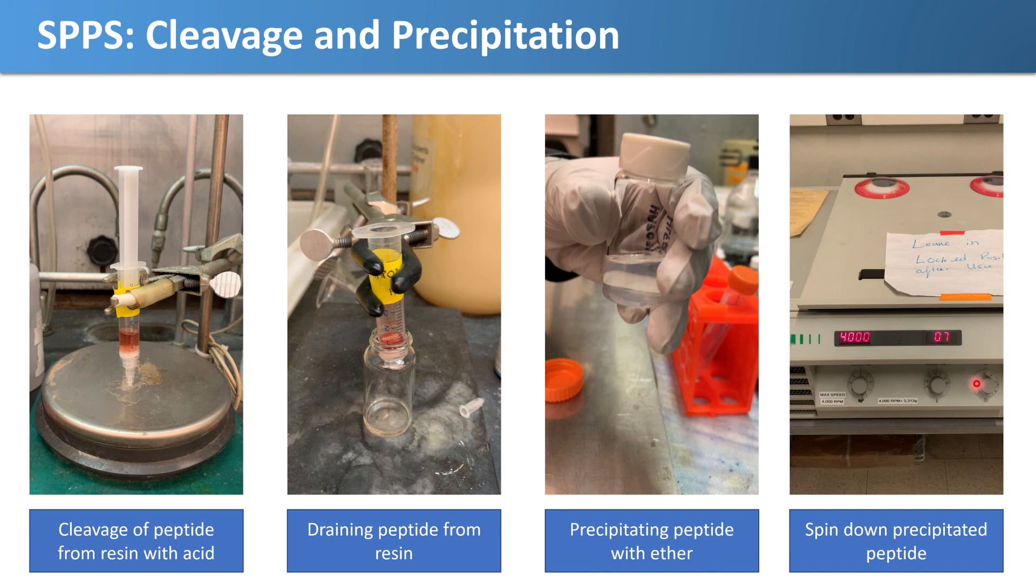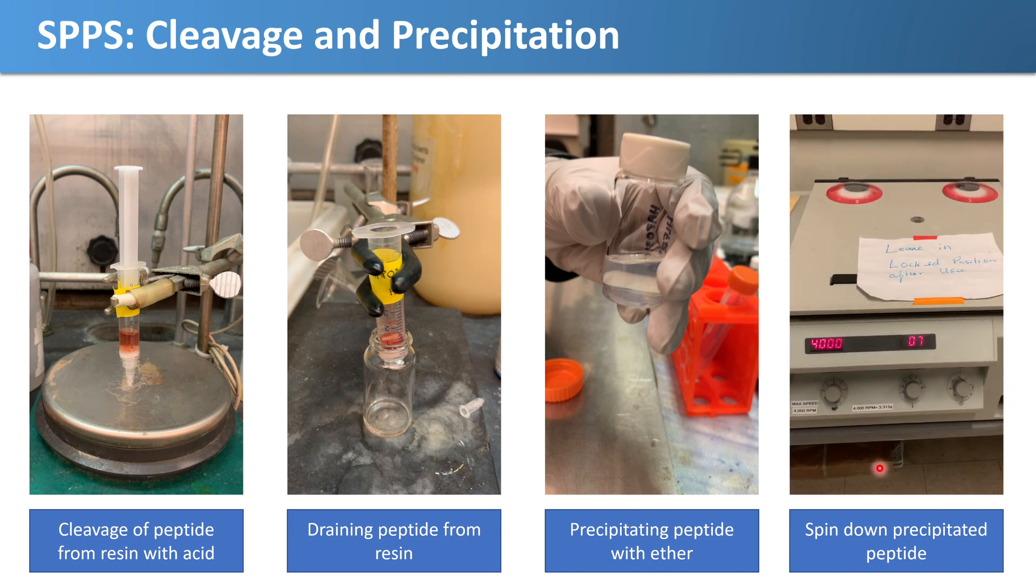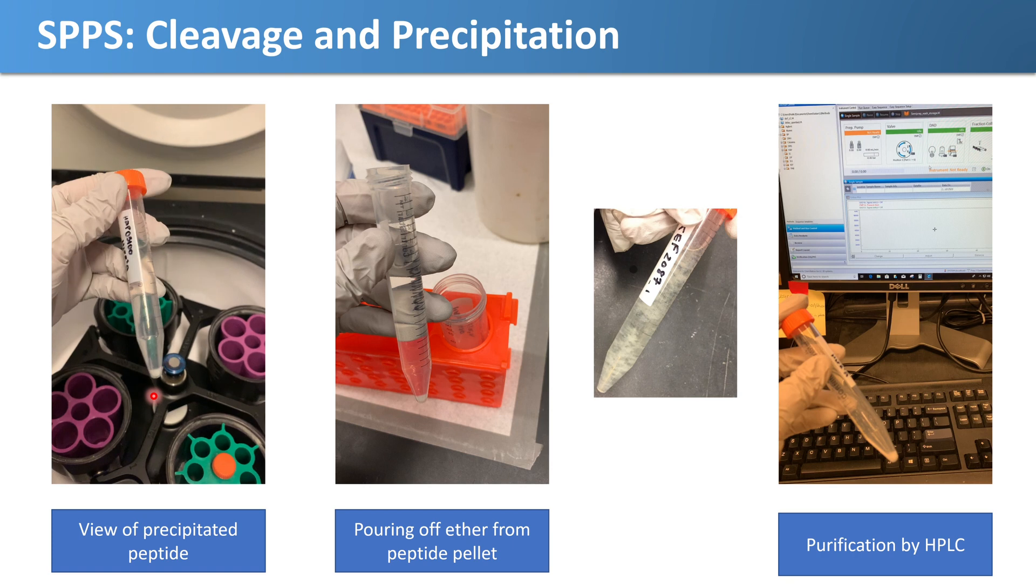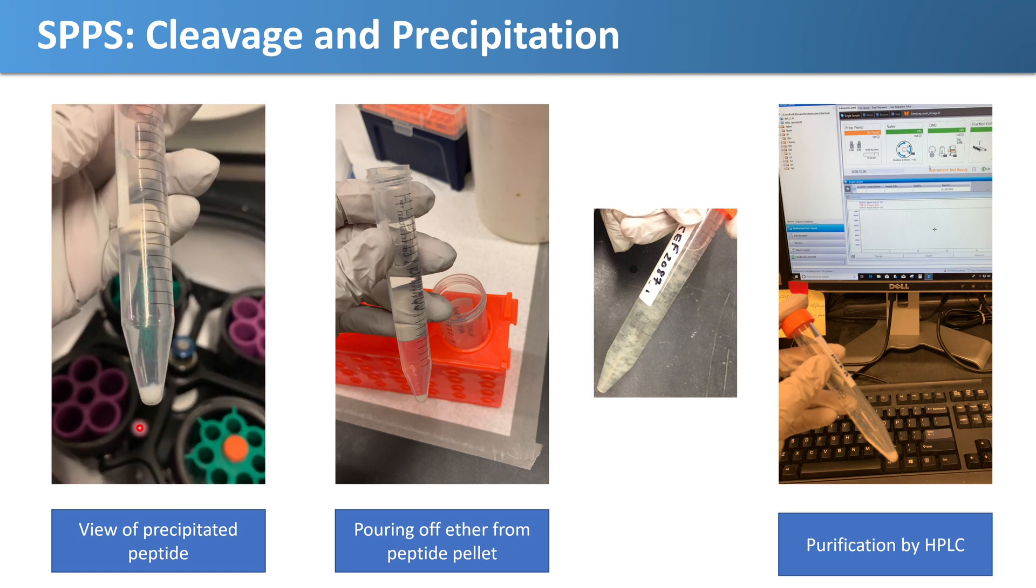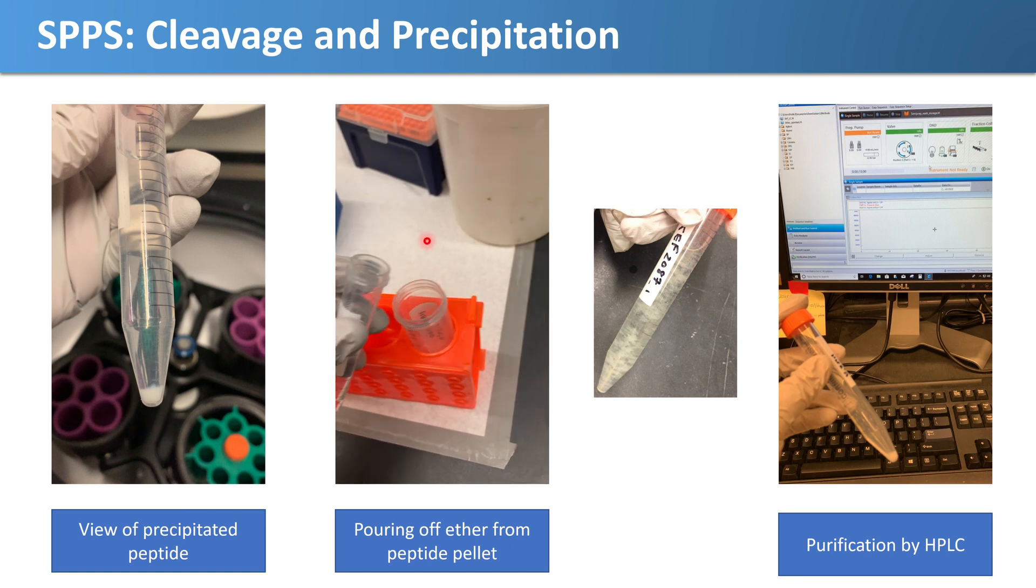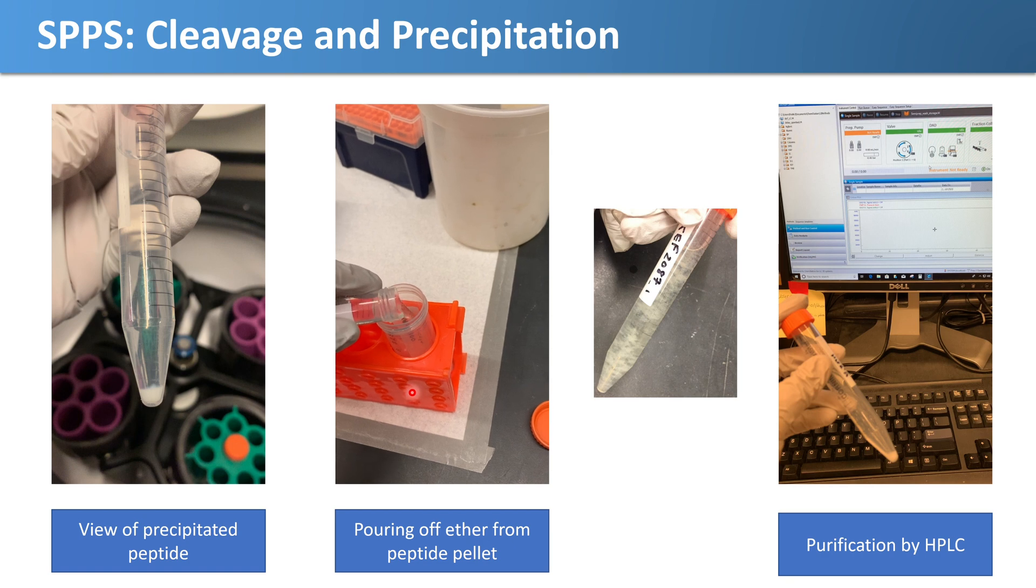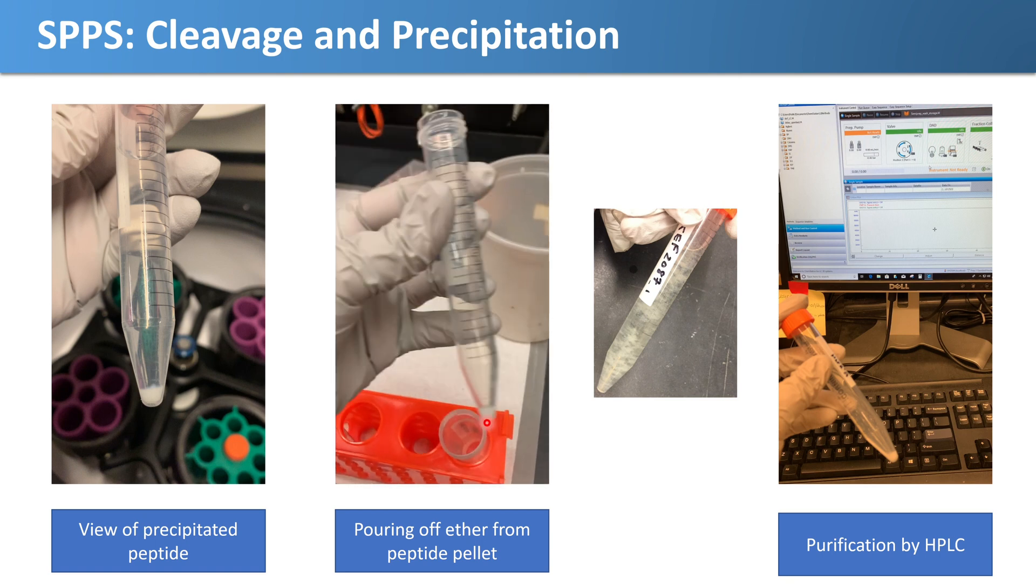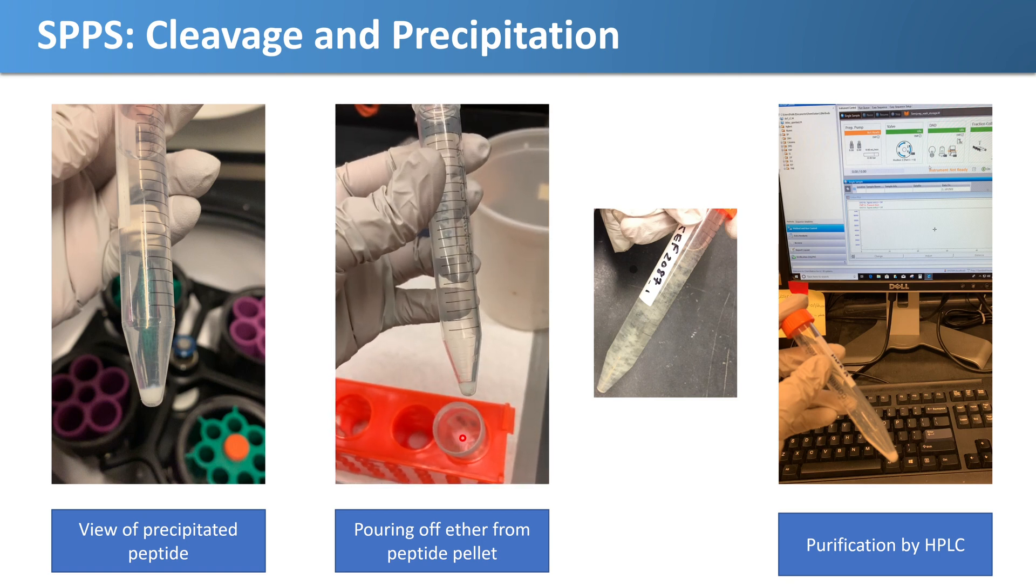To isolate our peptide, we spin it down in a centrifuge. This is after centrifuging it, and you can see there is our pellet, there is our peptide. If you pour off the ether, you can isolate our desired peptide. This is actually from another peptide synthesis that I did. It was on a little bit of a bigger scale, so you can really see the precipitated peptide when it's in the ether.